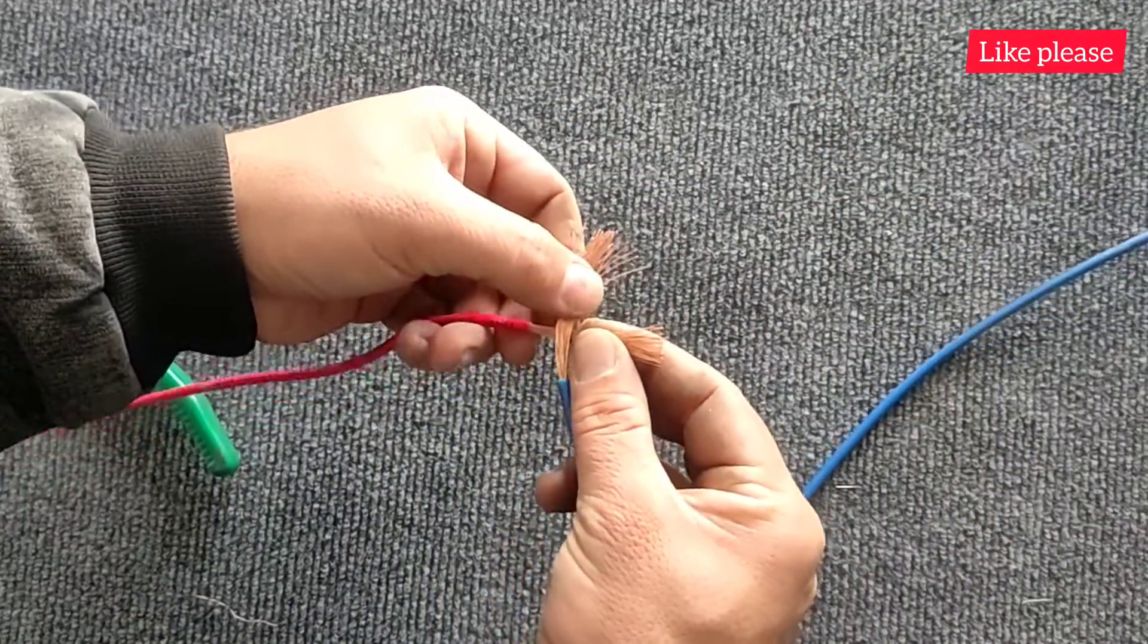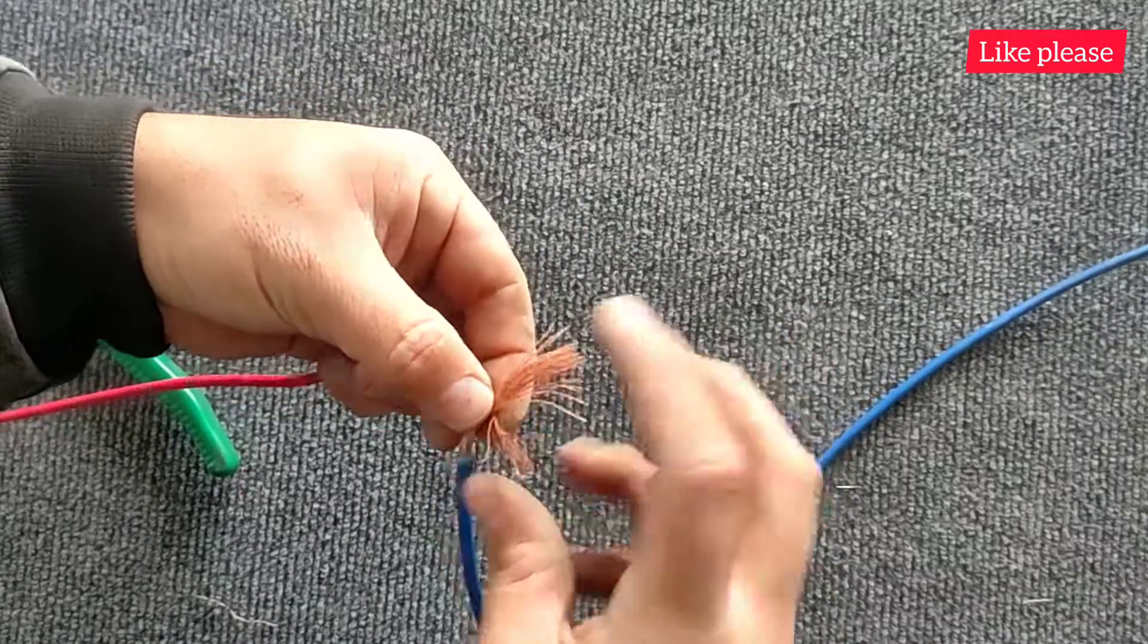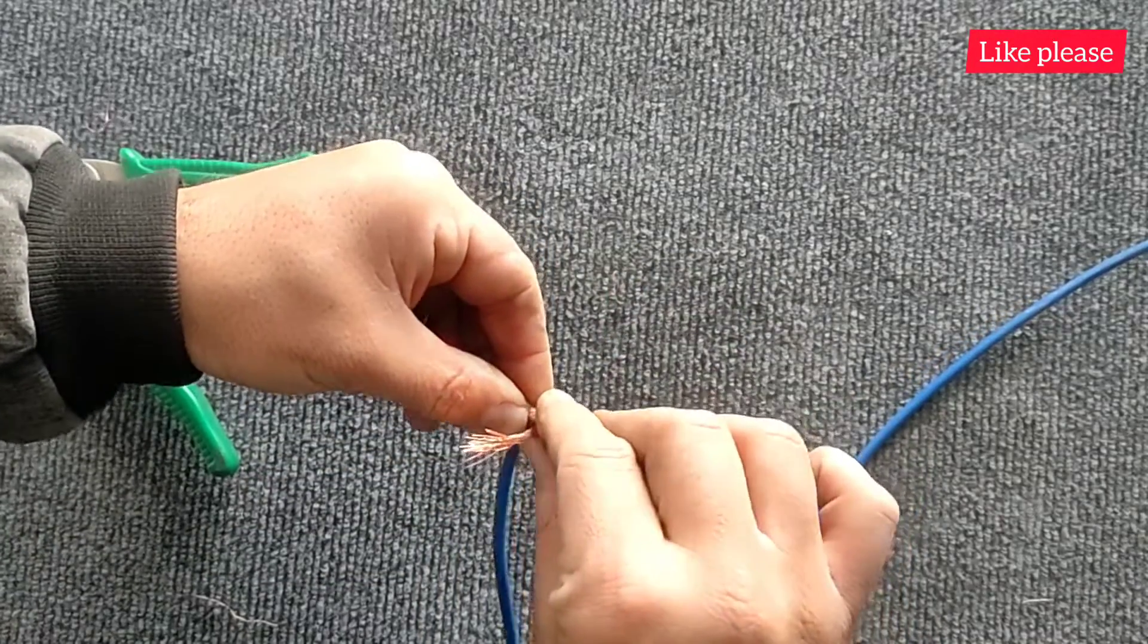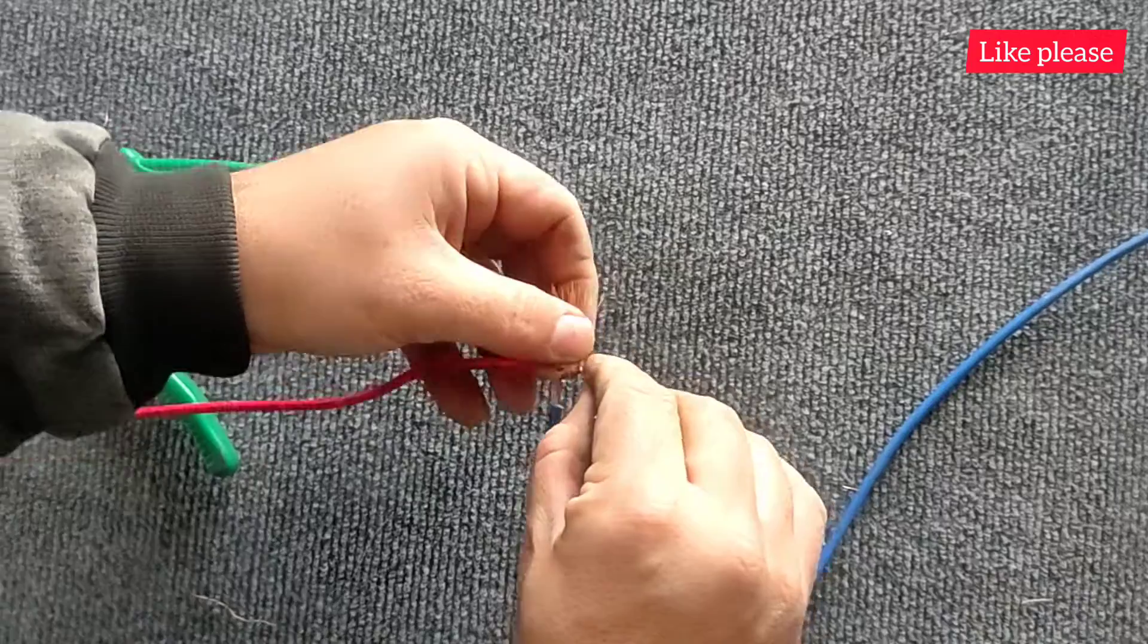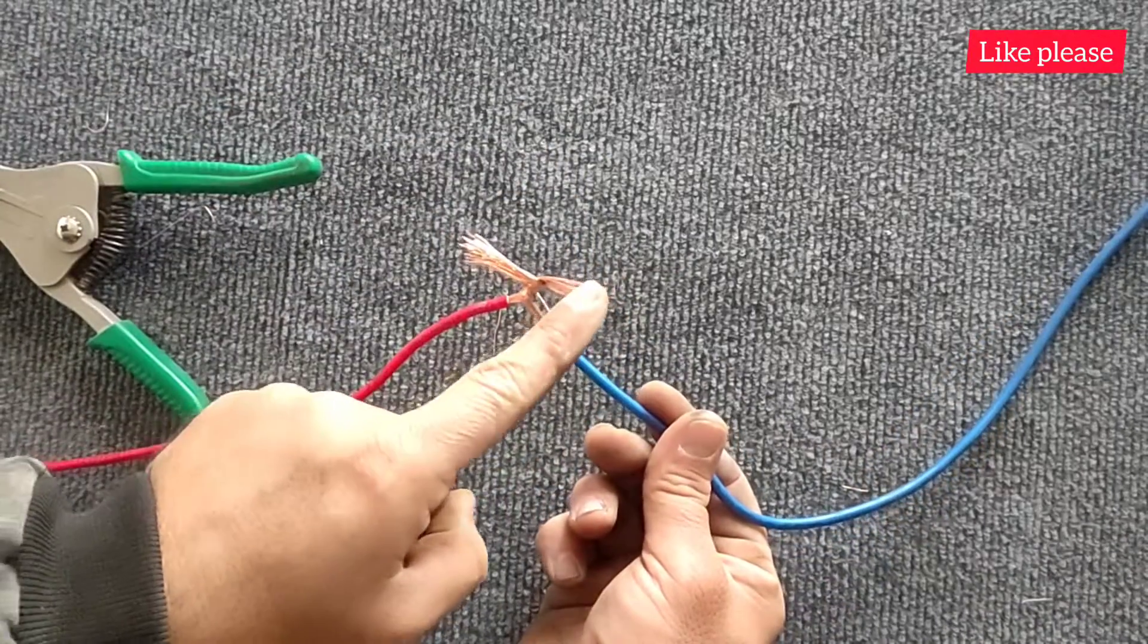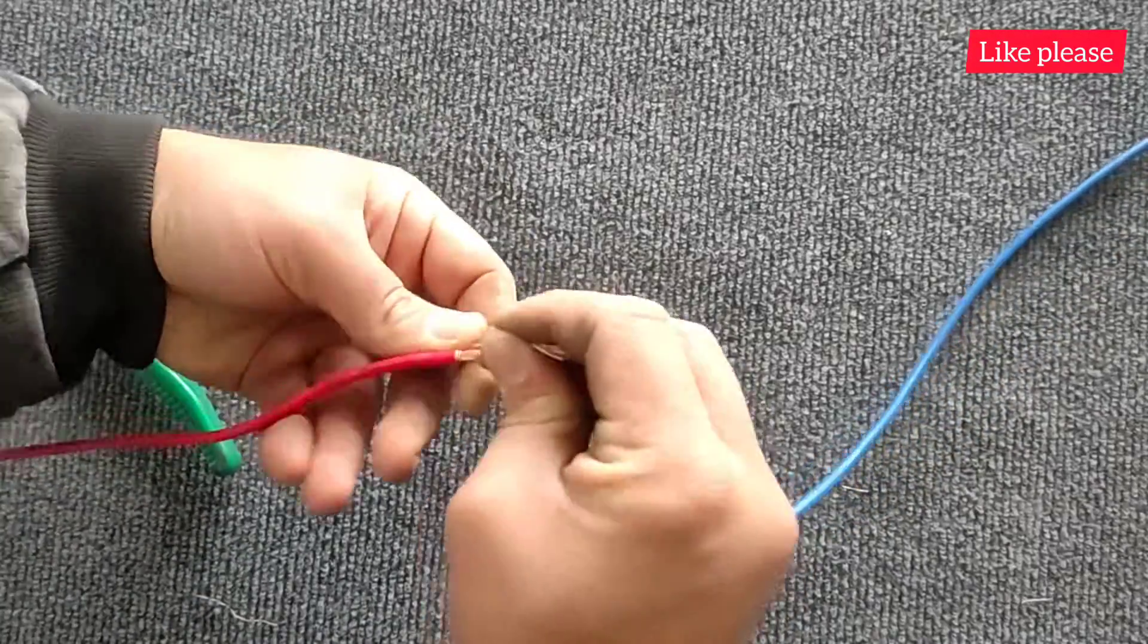In the last method, which is the best method, we act similar to the third method, with the difference that we tie the wires together twice. With this, the wires are wrapped around each other and a good connection is made. That is, the red wire is connected to the blue and the blue to the red.